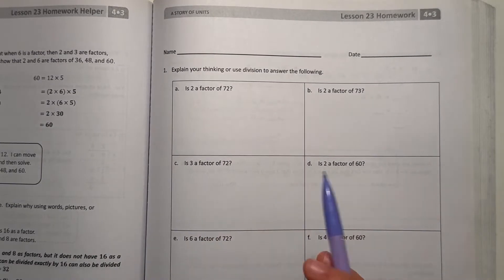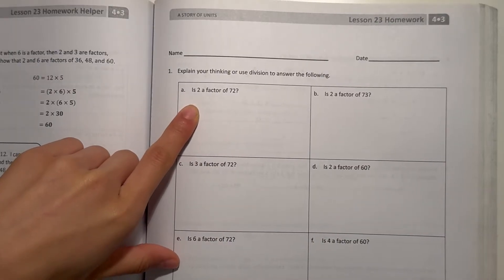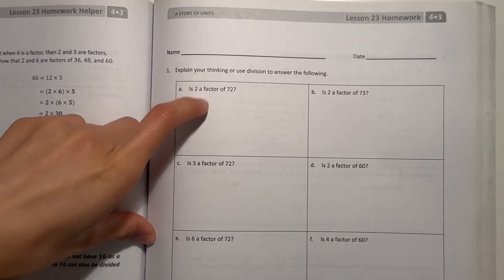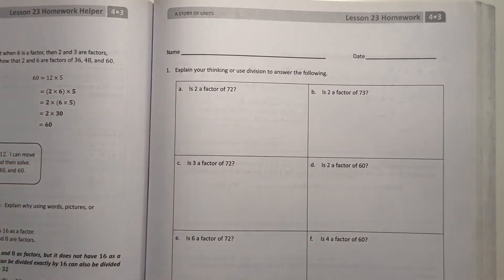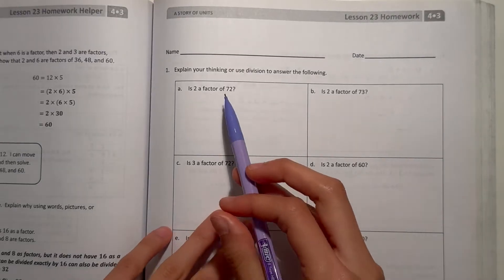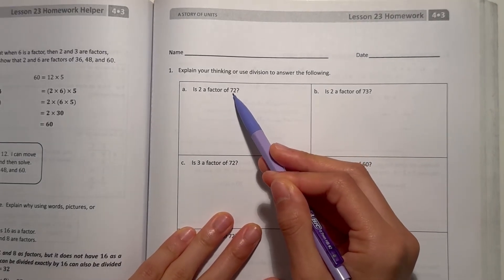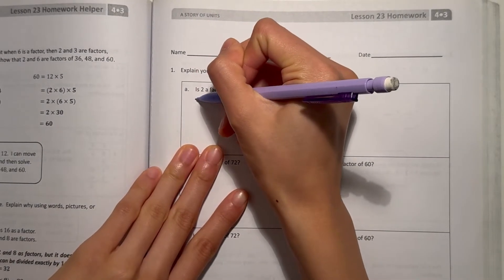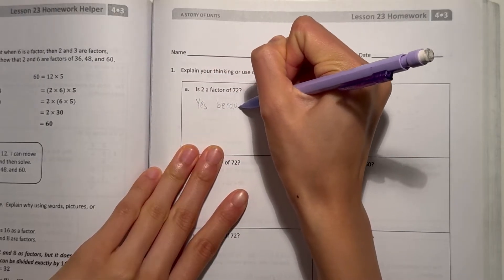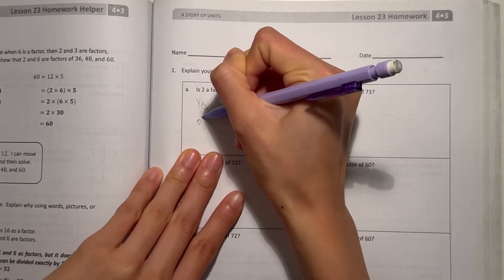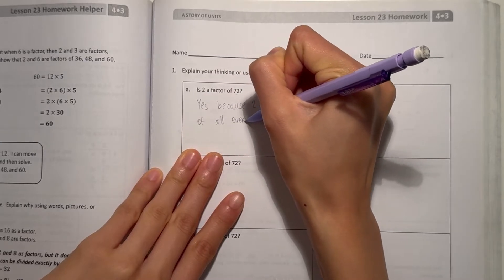Is 2 a factor of 72? Right away, we know 2 is a factor because any number that is even will be divisible by 2. So 2 is a factor of all even numbers. Even numbers end with 0, 2, 4, 6, or 8 in their ones place. Since 72 ends in a 2, that makes this number even, which means it's divisible by 2. So yes, 2 is a factor. Yes, because 2 is a factor of all even numbers.